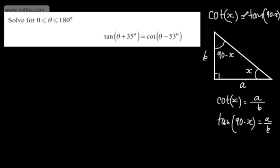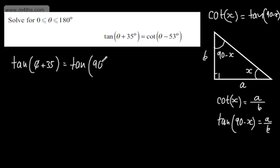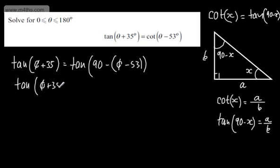You can see that graphically or just remember it as an identity. So we can rewrite the equation as tan of theta plus 35 degrees equal to tan of 90 minus the quantity theta minus 53 degrees. Tidying this up, we get tan of theta plus 35 equal to tan of 143 minus theta.